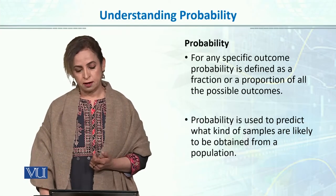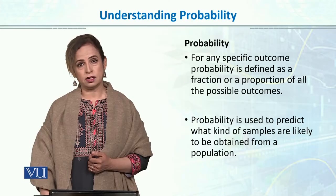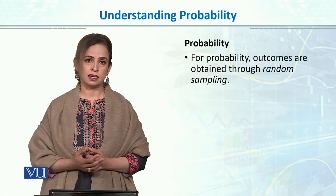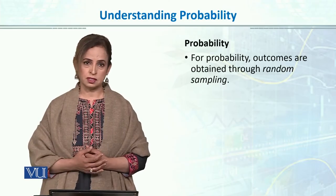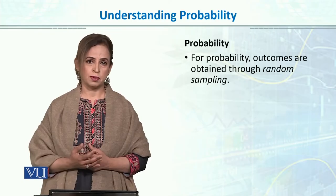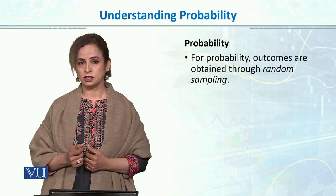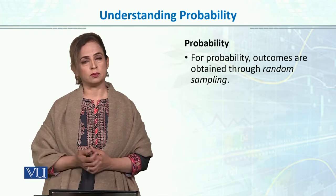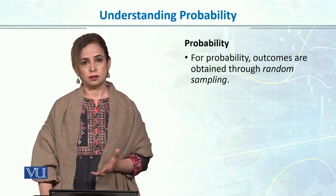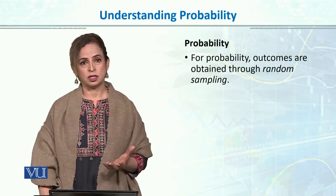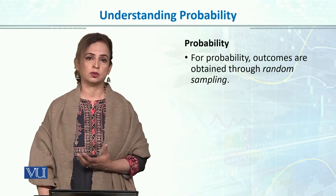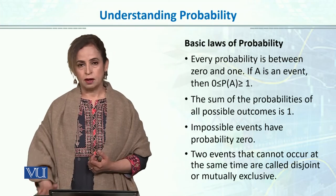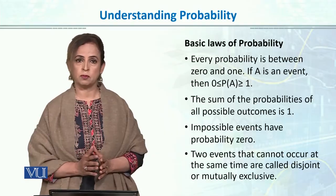Probability is used to determine what kind of samples are likely to be obtained from a population. For probability, we use random sampling. In random sampling, the probability of each element to be selected in a sample is known, and the chances for each individual to be selected are equal and known. Let's revise the basic laws one more time.